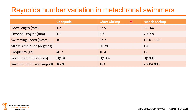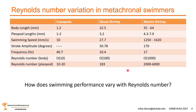We predominantly focused on ghost shrimp and compared results to data already collected on copepods and mantis shrimp. Copepods are the smallest organism, followed by ghost shrimp, with mantis shrimp being the largest. For copepods, both body and pleopod Reynolds numbers are on the order of 10; for ghost shrimp they are on the order of 100; and for mantis shrimp on the order of 1,000. This raises the question: how does swimming performance vary with Reynolds number?